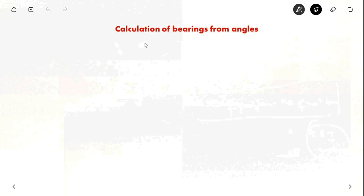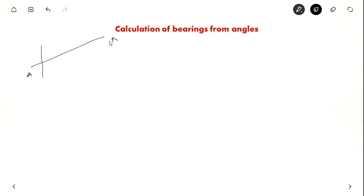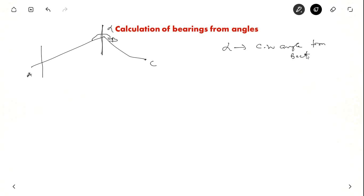Now let us see how to calculate bearings from angles. Taking the same kind of example with lines AB and BC, let us say angle ABC, alpha, is given. It could be this angle or it could be the other angle. Alpha is the clockwise angle from the back station. So what is the clockwise angle from AB? AB is the back station; BC is the fore station.